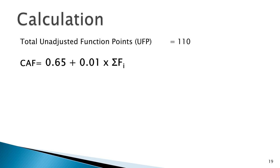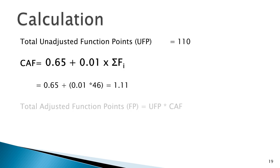Now, putting this summation into the formula: CAF = 0.65 + 0.01 × 46 = 1.11. Now we calculate the Adjusted Function Point: AFP = UFP × CAF.